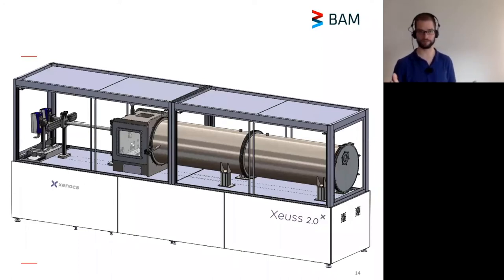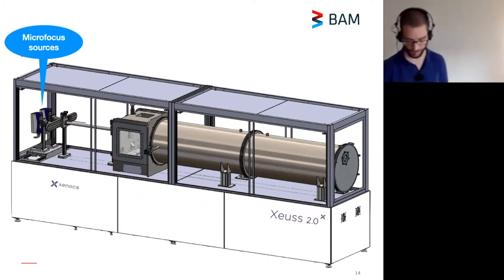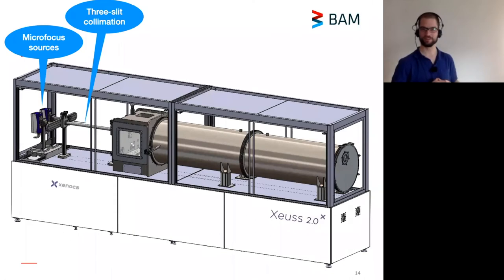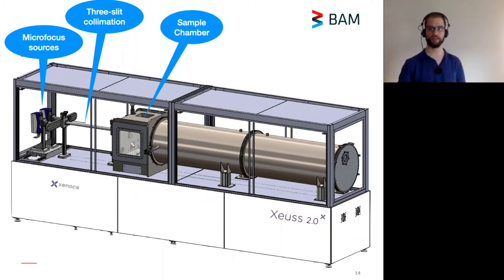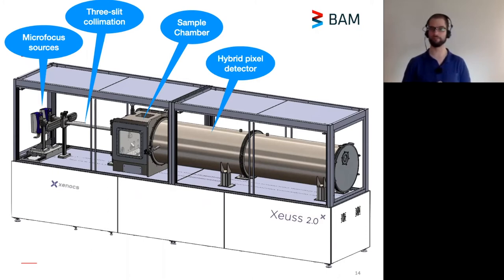The machines very much reflect this principle. Our machine has two x-ray sources — a copper source and a molybdenum source — so we have different x-ray photon energies we can play around with, which has turned out to be more useful than I thought. There is a three-slit collimation after the monochromator attached to the sources, with which we can cut down the beam to whatever size and shape we want. We have a very large vacuum sample chamber, and at the end there is a hybrid pixel detector on a motorized carriage so we can move it backwards, forwards, and sideways.